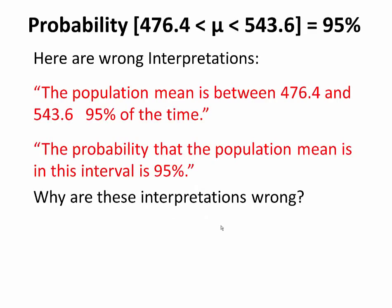The confidence interval is commonly misinterpreted. Here are some wrong interpretations: 'The population mean is between 476.4 and 543 95% of the time,' or 'The probability that the population mean is in this interval is 95%.' What's wrong with those interpretations is that the population mean is a constant. We don't know what it is, but it's fixed — it's written in the dust on the backside of the moon. It's the interval that has the probability associated with it.